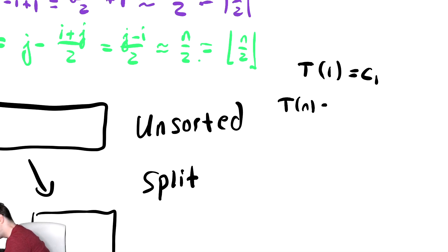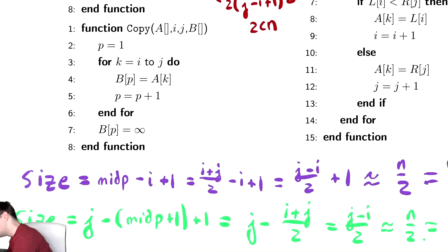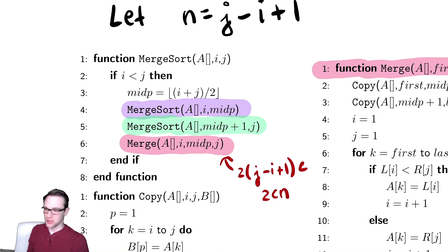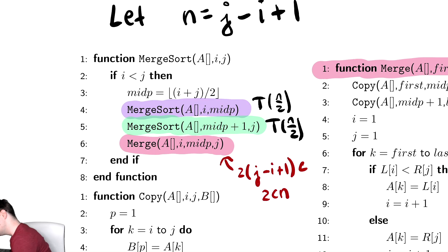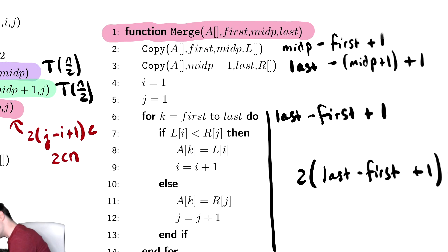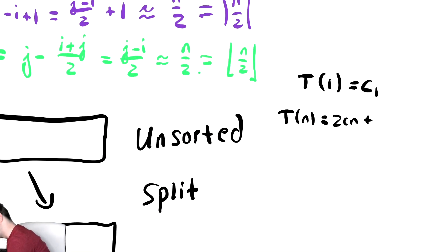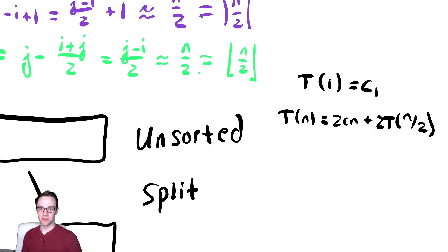After I have that base case, I need to write down the recurrence. Well, the recurrence was I had 2cn for the non-recursive work, plus we had two recursive calls. The first one is T of n over 2, because that's the size. The next one is T of n over 2. So we have T of n over 2 plus T of n over 2, which is also known as 2T of n over 2. So we're going to write that as T of n equals 2cn plus 2T of n over 2. Now that we have a recurrence relation, all that remains is to analyze it and determine the running time.